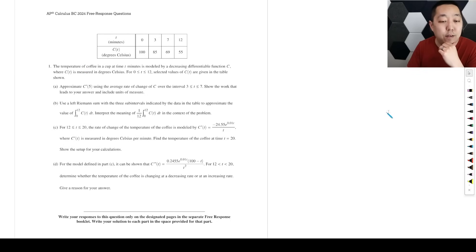We have the temperature of a coffee cup modeled by a decreasing differentiable function C, where C is measured in degrees Celsius. So it's decreasing and differentiable. Approximate C prime. C prime of 5 is going to be approximately equal to using the average rate of change of C over the interval. Show the work that leads to your answer, include units of measure.